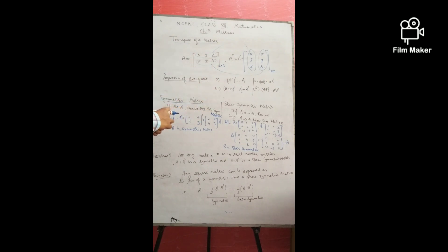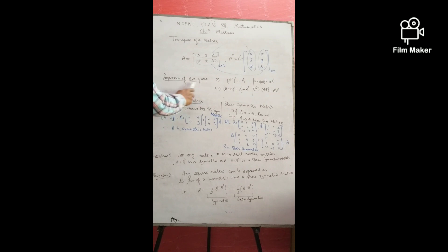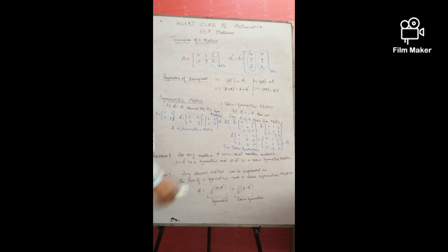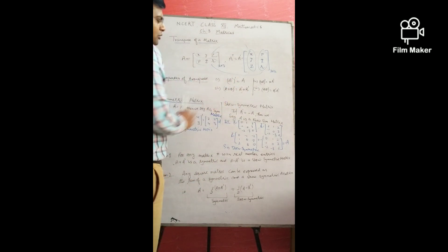So the transpose of a matrix is simply the interchanging of rows and columns. That is the definition based on what we have discussed. A property of transpose: if you do the transpose twice, it becomes the original matrix.